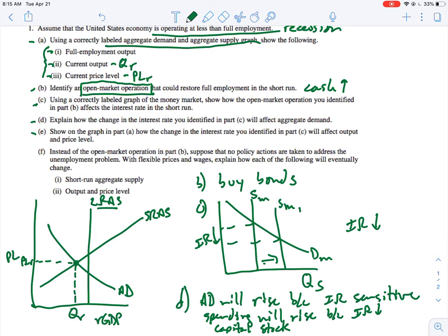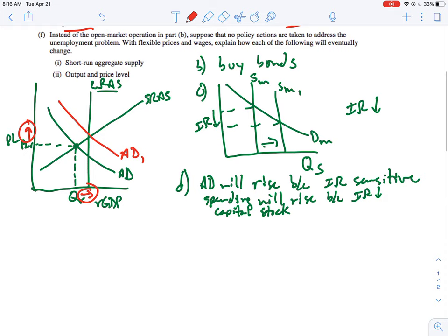All right, so now this one's a little bit weird. They probably wouldn't have you do this anymore where they go back and have you further complicate the graph. So I'm going to switch colors, but on the graph in part A, how will the change in the interest rate you identified in C affect output and price level? So what it's going to do is shift. We said that AD would go up, so we'll shift to AD1 and output will rise. So output will rise and the price level will rise. You can do that with these two arrows.